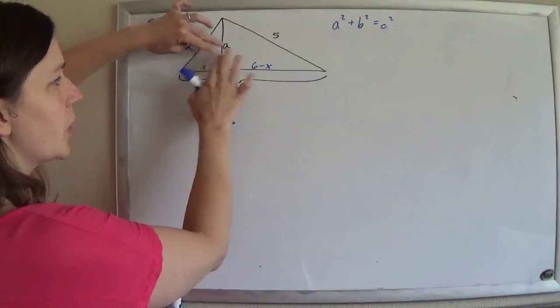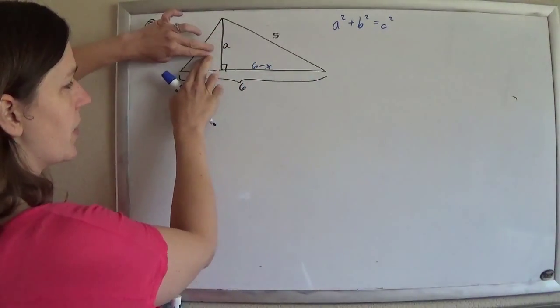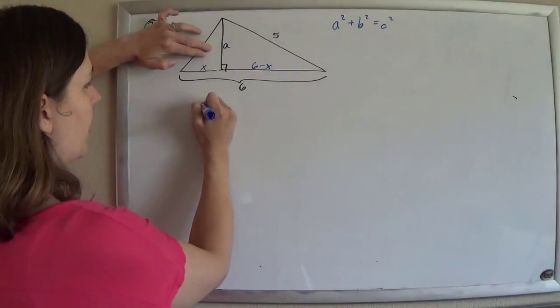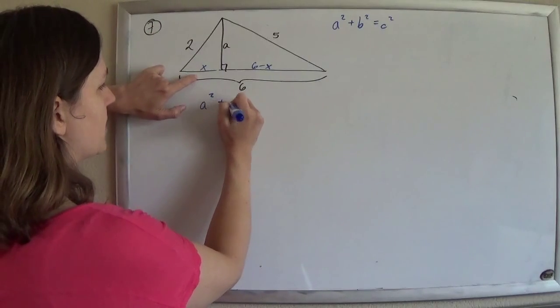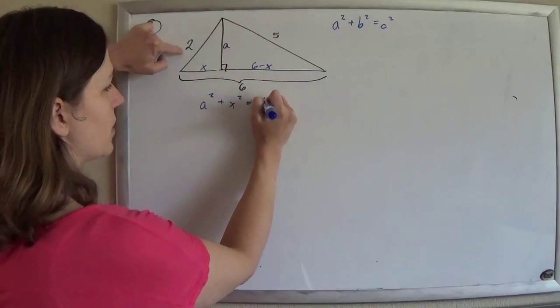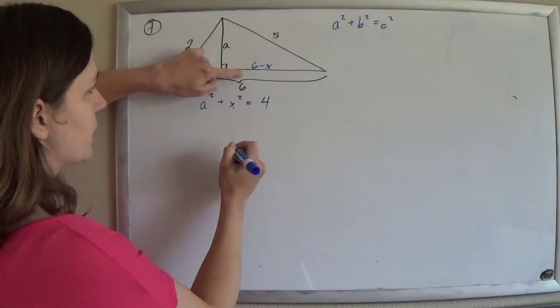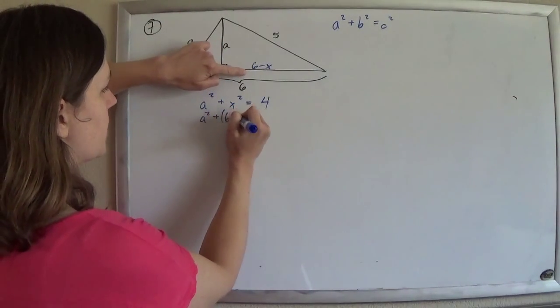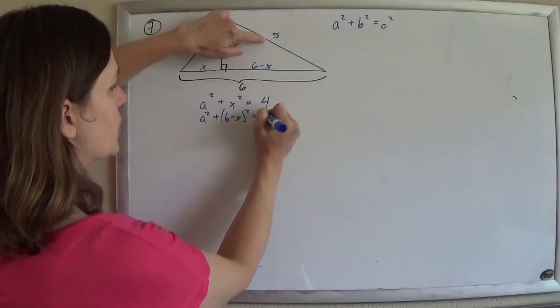And so now I'll have two equations with two unknowns. One equation for this triangle, one equation for that triangle. It'll be gorgeous. So for the left triangle, I'll have a squared plus x squared equals 2 squared. So that's 4. And for this triangle, I'll have a squared plus 6 minus x squared equals 25.